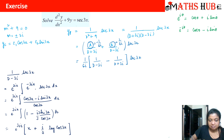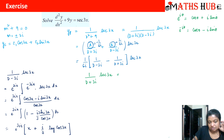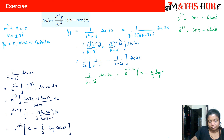Similarly, for the second term 1/(d + 3i) times sec(3x), we replace i with −i throughout. This gives e^(−3ix) times [x − (i/3)·log|cos(3x)|].